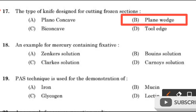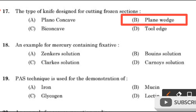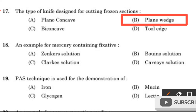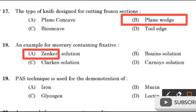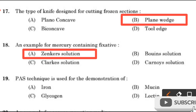Question 18: An example of a mercury containing fixative — Zenker solution, Bouin solution, Clark solution, or Carnoy solution? Mercury containing fixative is Zenker solution.